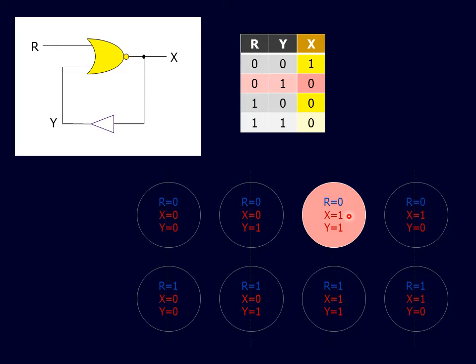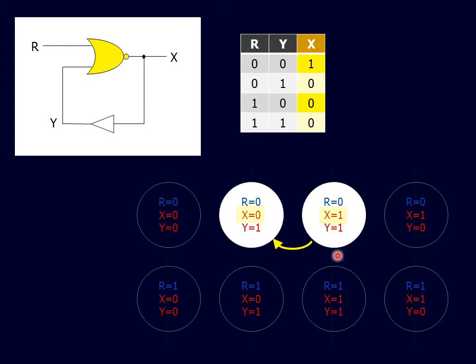As an example, the R equals 0, X equals 1, Y equals 1 state is incompatible with this NOR relationship. For this reason, this state is called an unstable state. If the circuit were to enter this state, the NOR gate will force the X value to change from 1 to 0. This state transition is indicated by a curved clockwise arrow.